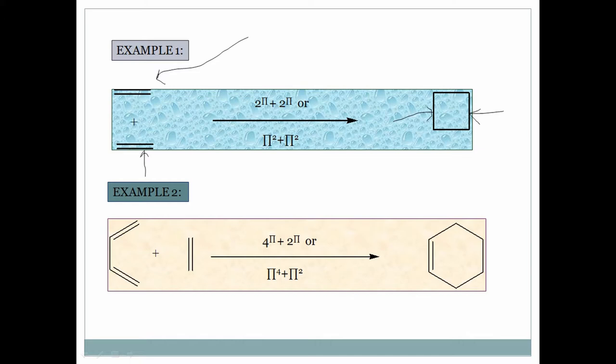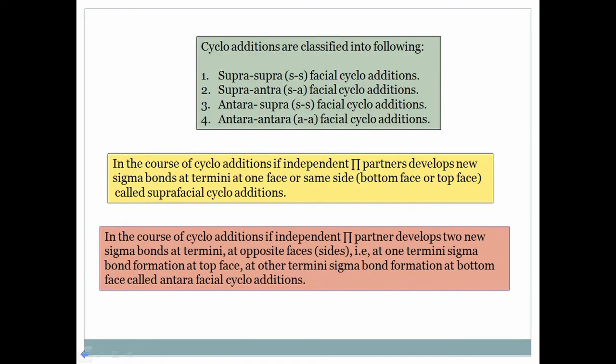For the second example, it is 4π+2π cycloaddition. If you take 1,3-butadiene and ethylene, at the termini of 1,3-butadiene and at the terminus of ethylene, a new sigma bond forms. The pi bond migrates in 1,3-butadiene, and at the termini there is new sigma bond formation. This is called a cycloaddition reaction.